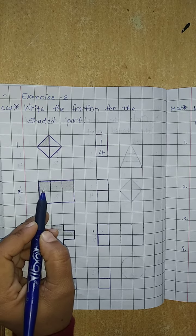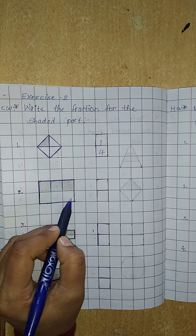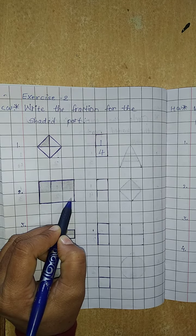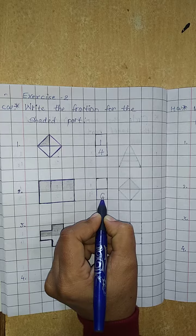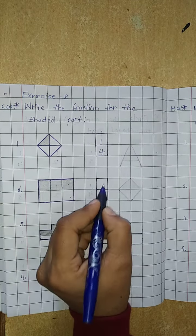Now number 2. Here is how many total parts? 1, 2, 3, 4, 5, 6 parts. So we have to write 6 on the downside. And how many shaded parts? 1, 2, 3. So write 3 upside.